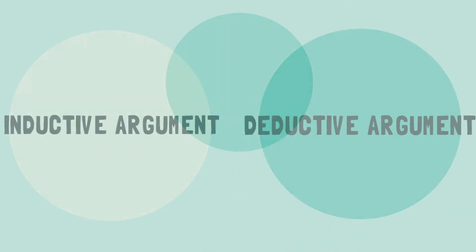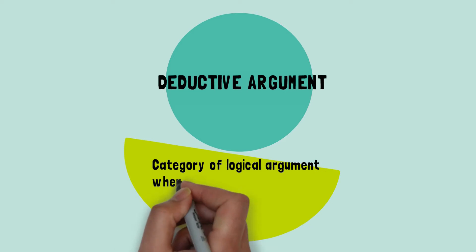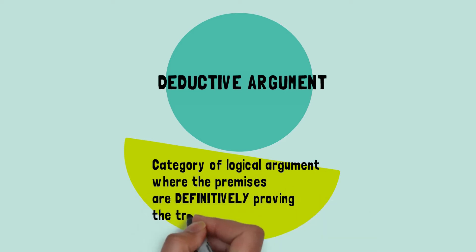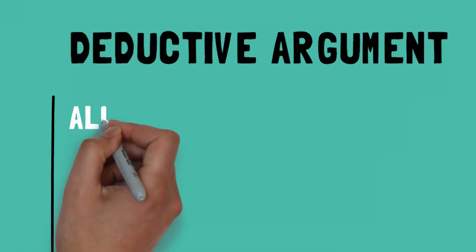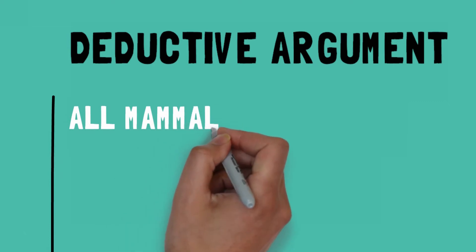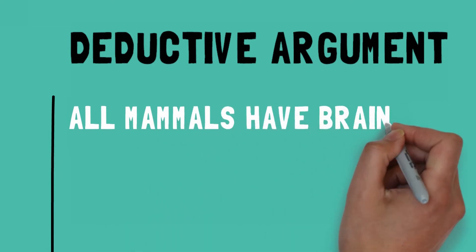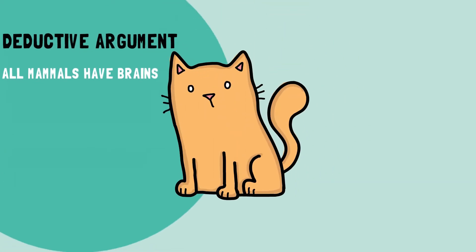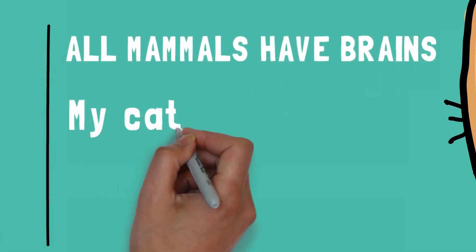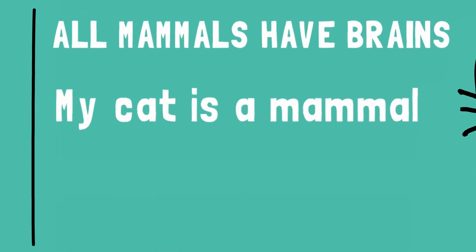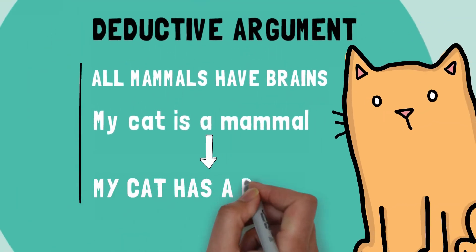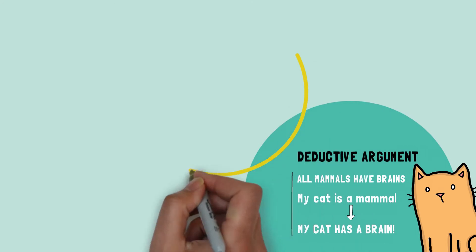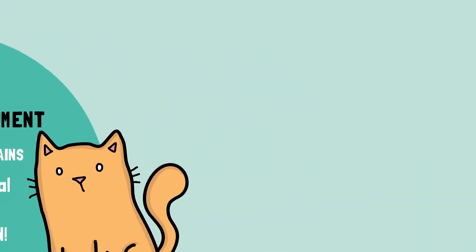A deductive argument is a category of logical argument where the premises are definitively proving the truth of the conclusion. Here is an example: All mammals have brains. My cat is a mammal. Therefore, my cat has a brain. The conclusion that my cat has a brain is beyond doubt — 100% certain.